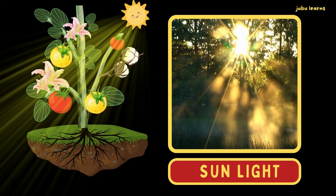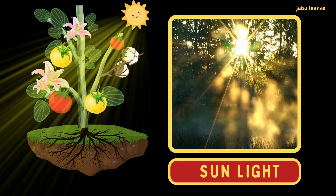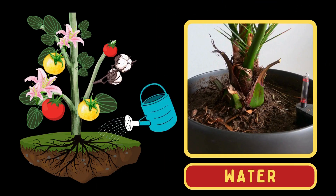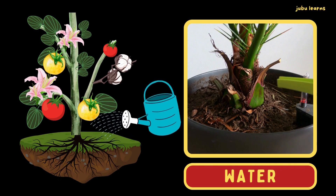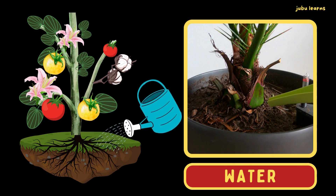Plants produce nutrients from sunlight and this process is called photosynthesis. Water helps in transport of nutrients in the plant.